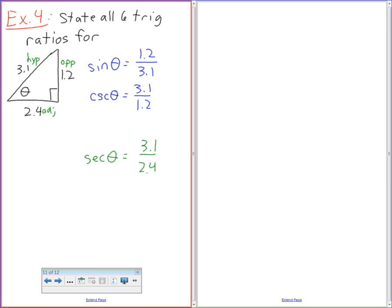Somebody else can please. What's related to secant? Cosine, okay? So if secant is 3.1 over 2.4, what's cosine going to be? Right on. But I just left versions up, right?